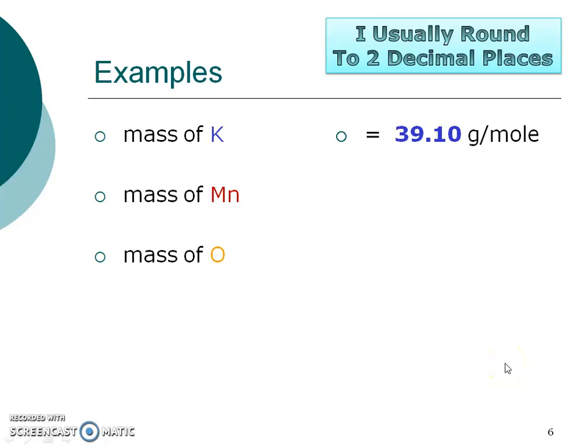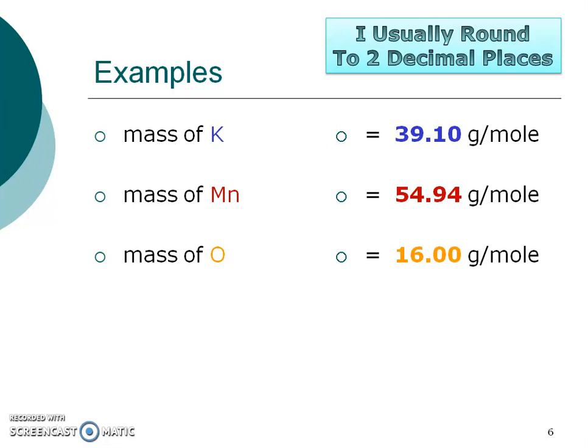N is manganese, and that's 54.94 on your periodic table. And O is for oxygen — I give that 16.00. Make sure to pause and fill that out in your notes. The mass of an element is pretty easy to figure out: look at the periodic table, and however many grams are listed, that's how much you would have to mass out to get one mole of that element.